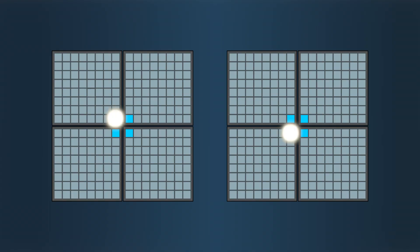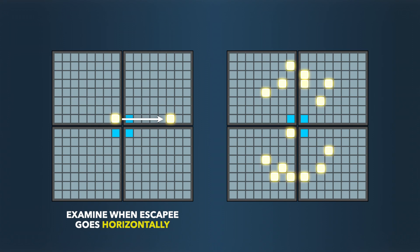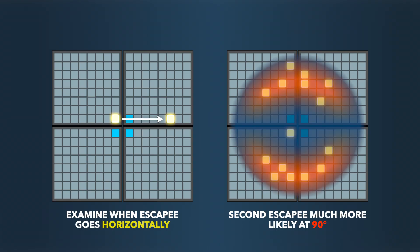When we decided that the first escapee was going horizontally, quantum entanglement made it much more likely that the other would go vertically, since the cos²(delta phi) has a maximum at 90 degrees.